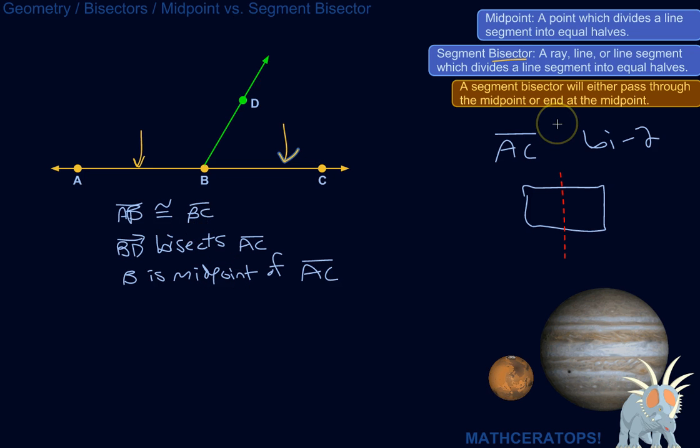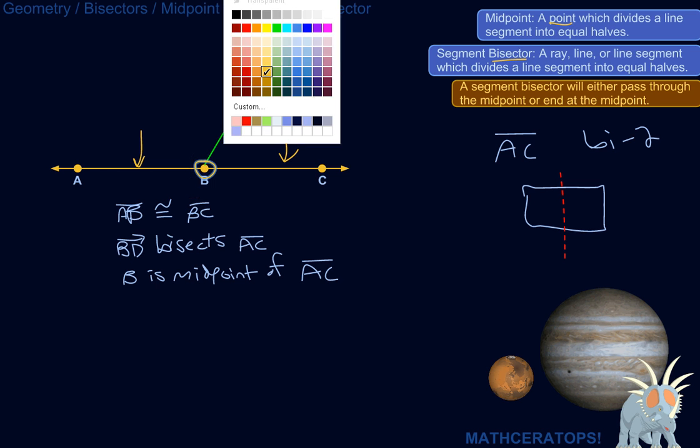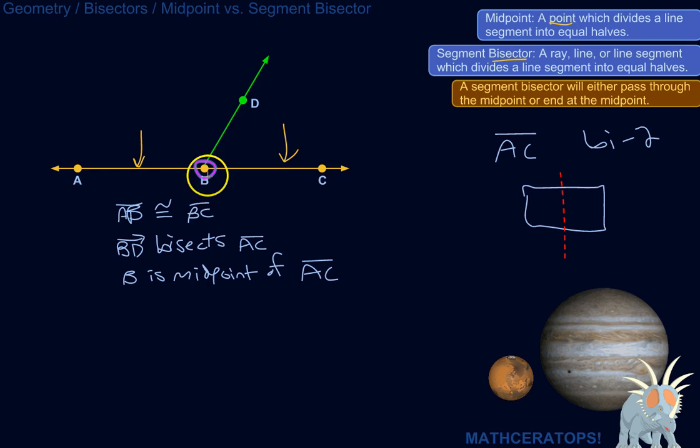So, yes, now a midpoint is a point which divides a line segment into equal halves. So the midpoint would be right there, B, given that BD, the ray BD, is a segment bisector, right? So the midpoint is part of a segment bisector, either the end point there, or it's just part of a larger segment or something.